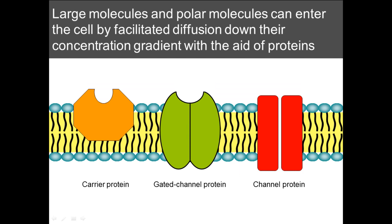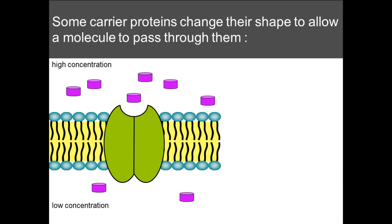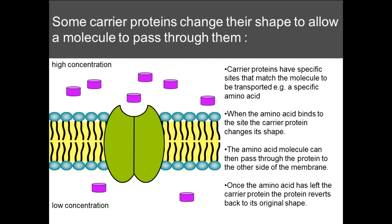Larger molecules and polar molecules can enter the cell by facilitated diffusion. The difference between facilitated diffusion and normal diffusion is that facilitated diffusion requires a carrier or a channel protein in order to move down the concentration gradient. It still moves from an area of high to low concentration, but it requires a channel or carrier protein. Some carrier proteins can physically change shape to enable a molecule to pass through them.